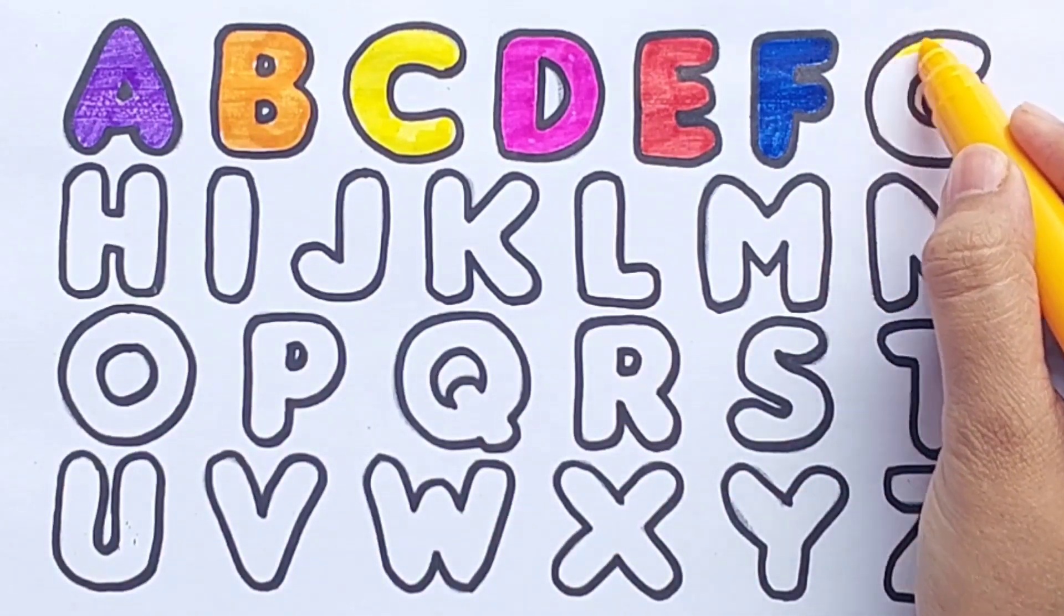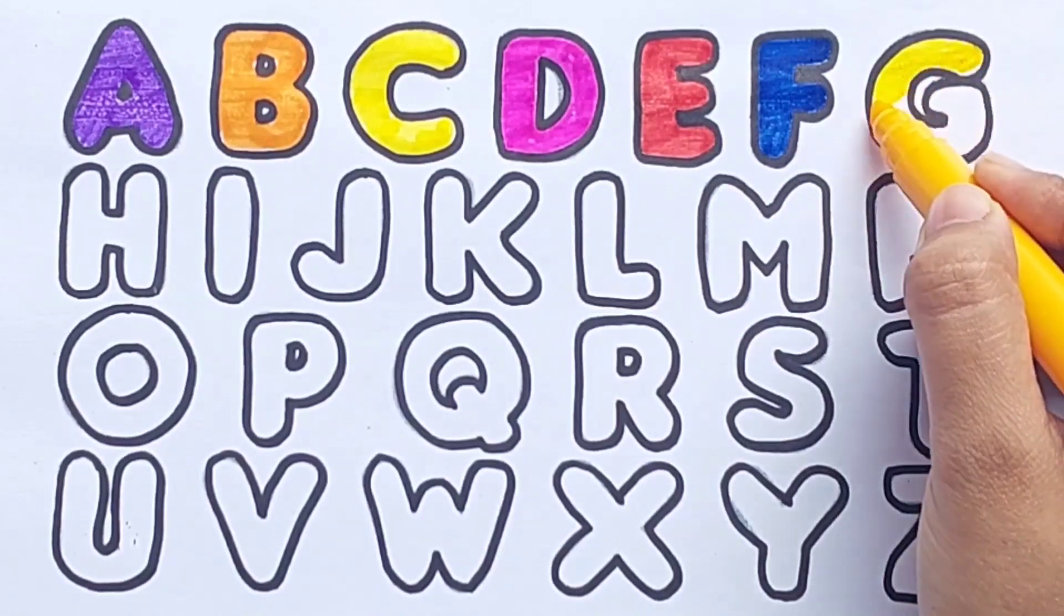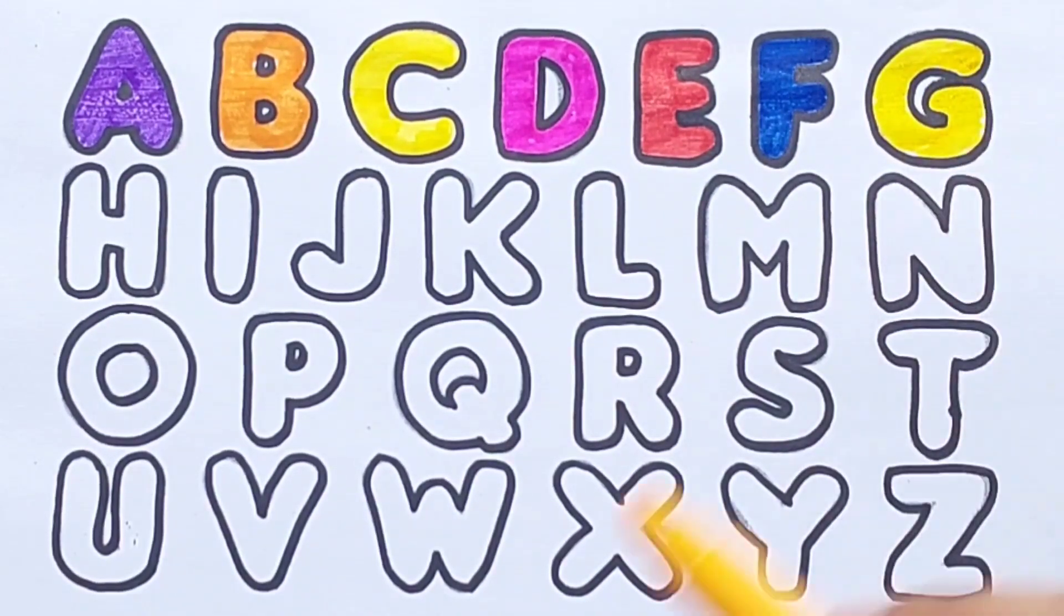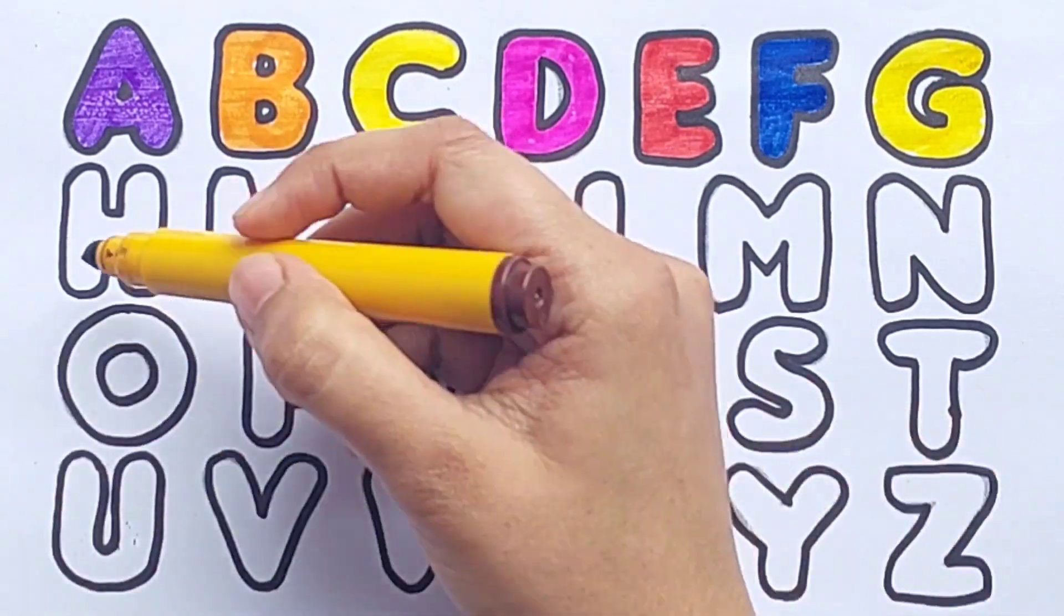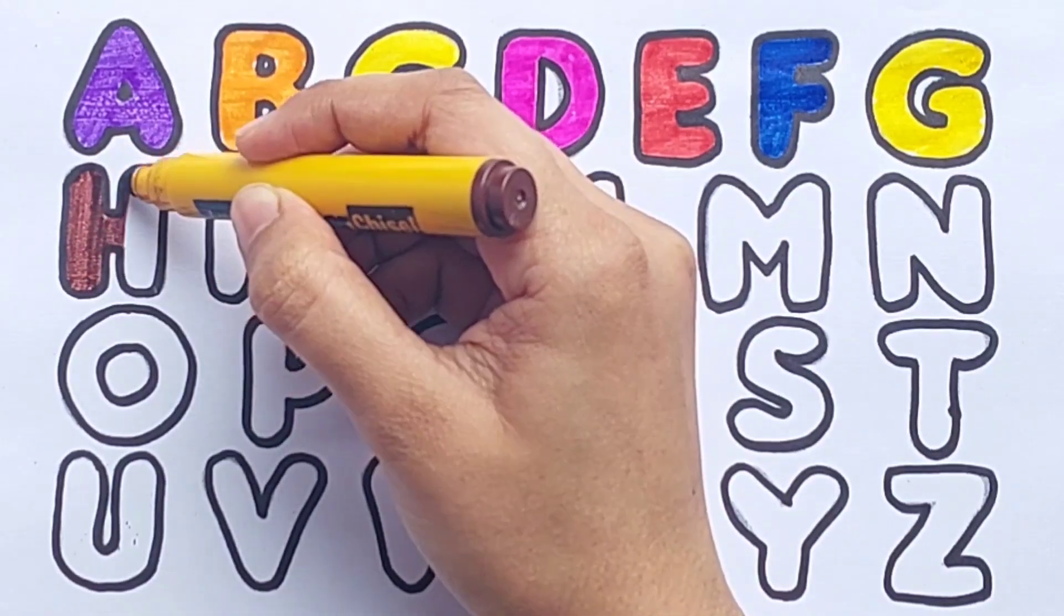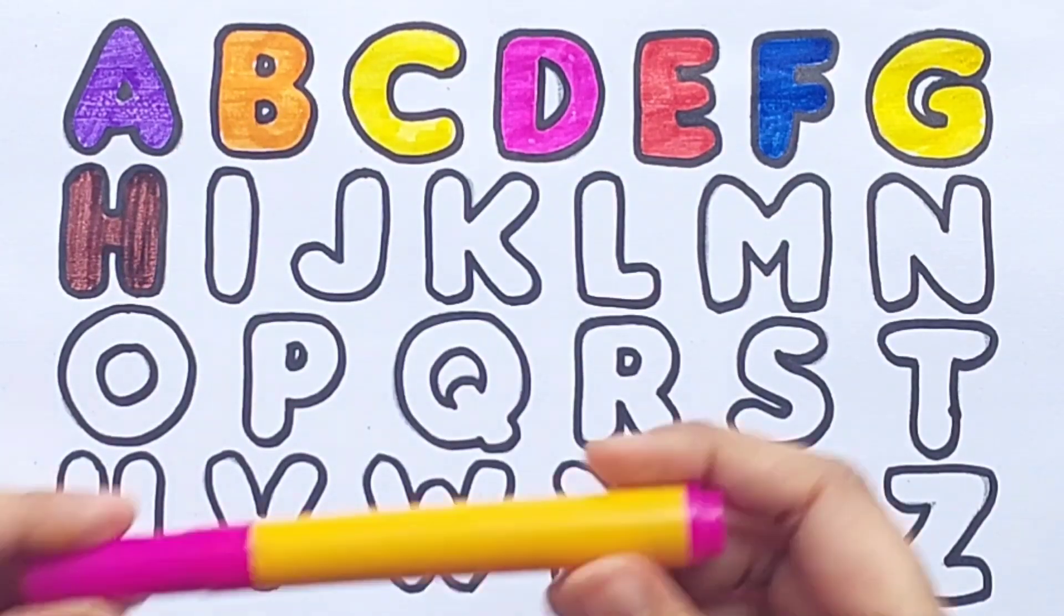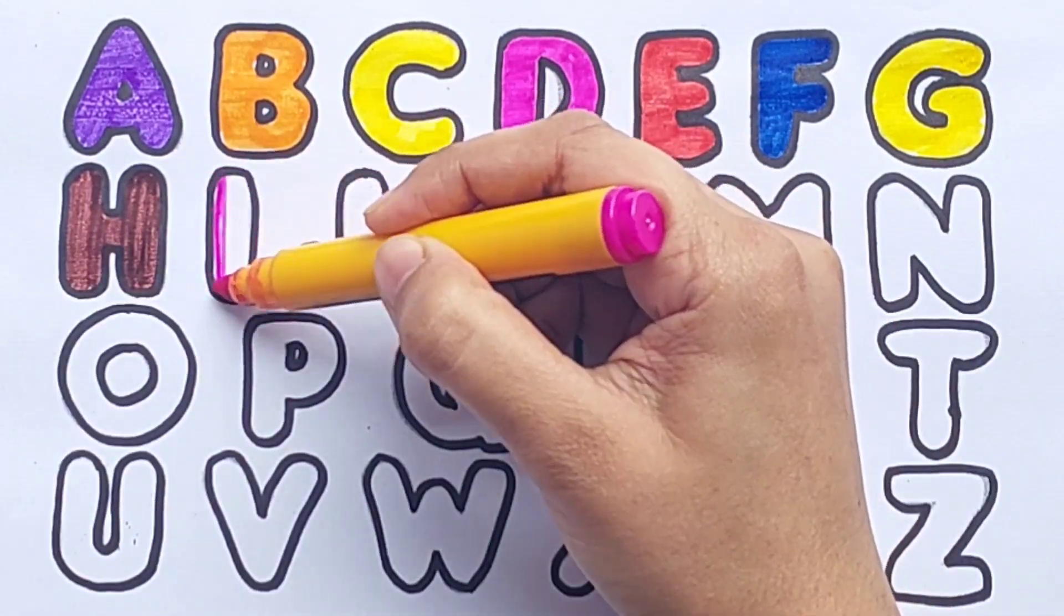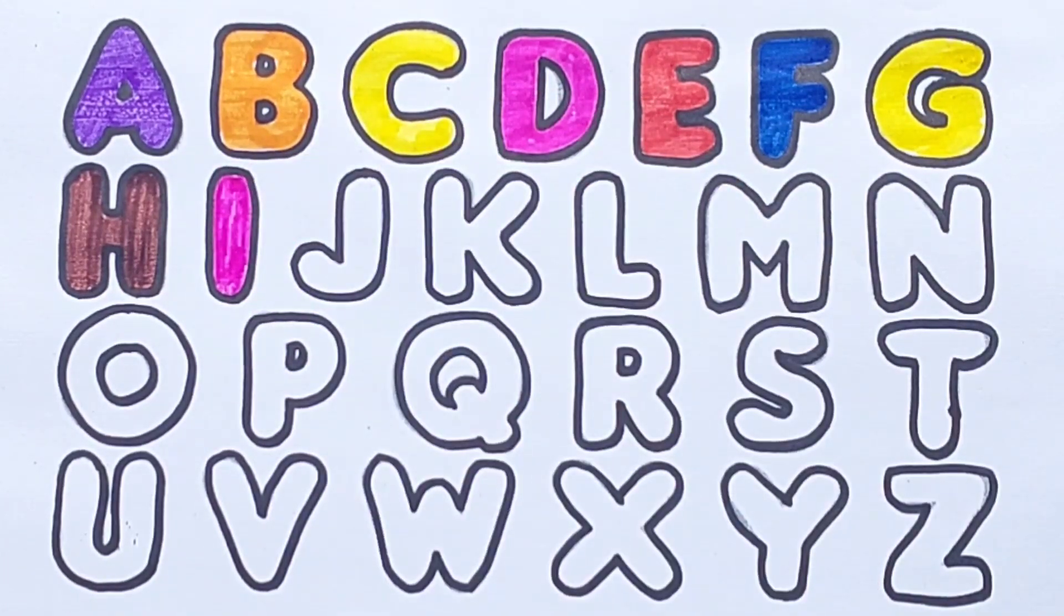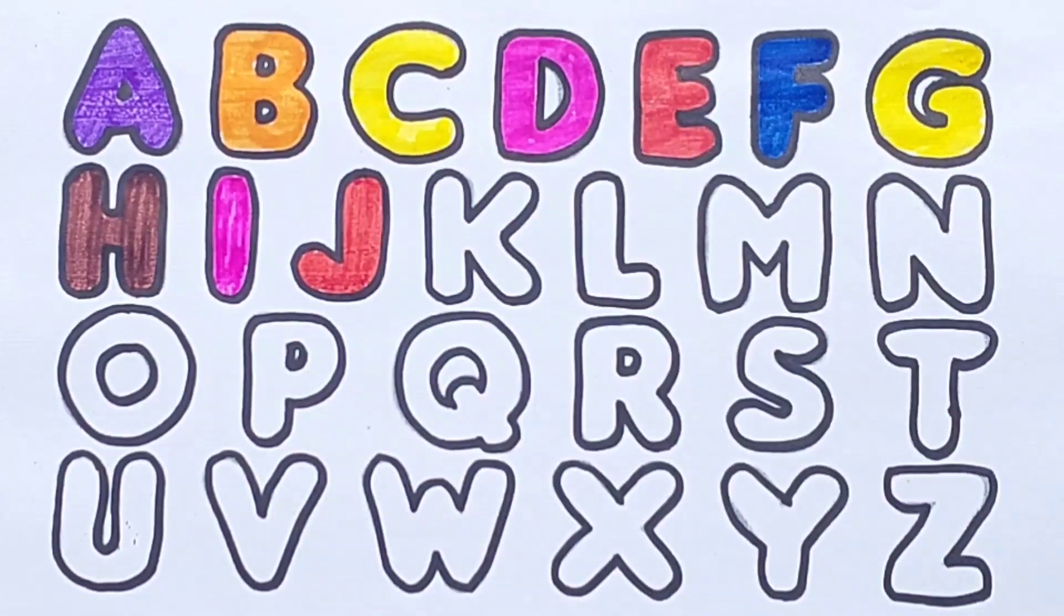Yellow color. G, G, G for Goat. Brown color. H, H, H for Hen. Pink color. I, I, I for Ink pot. Red color. J, J, J for Joker.